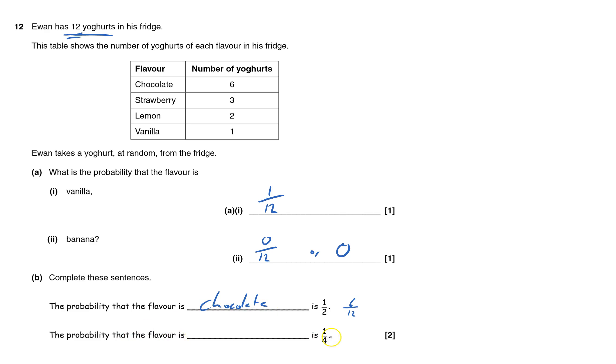The probability the flavor is something else is a quarter. Something out of 12 would be 3 out of 12, and that would be strawberry.